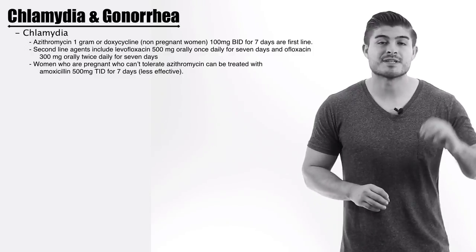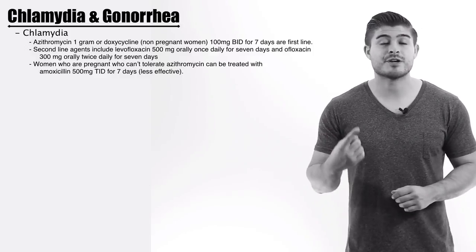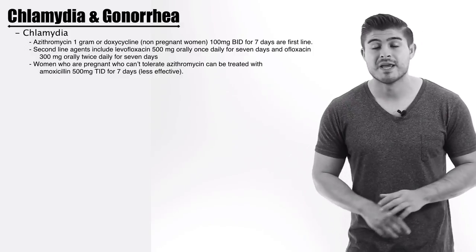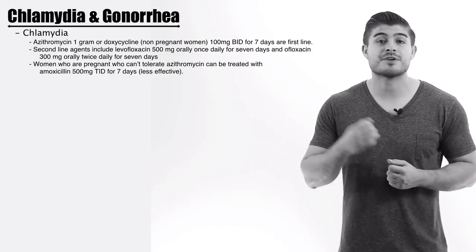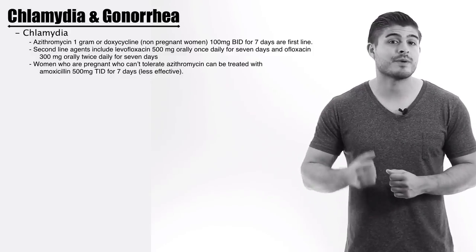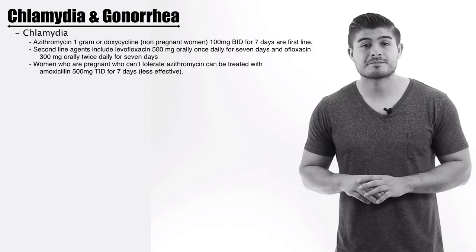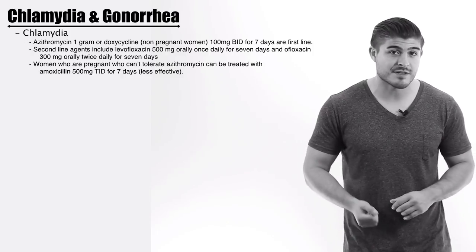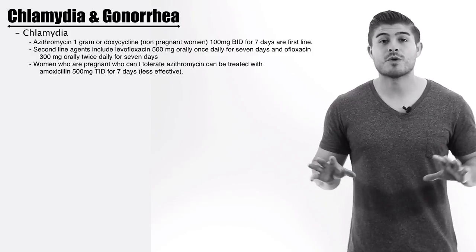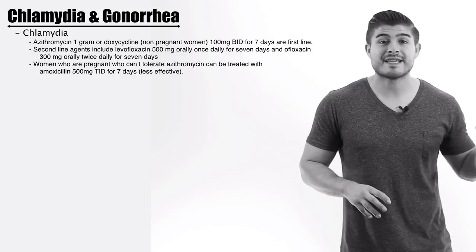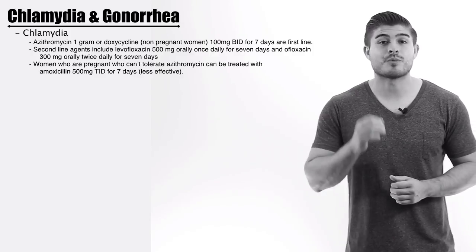In pregnant patients, we choose azithromycin because doxycycline is contraindicated in pregnancy — so we only have one option in pregnancy. If the patient cannot tolerate the one gram of azithromycin due to nausea and vomiting, the alternative is amoxicillin 500 milligrams three times a day for seven days. It's not as good as azithromycin, but it's an acceptable alternative in the pregnant patient only.